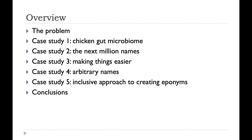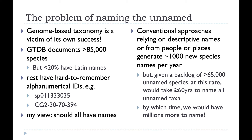The problem of naming the unnamed is the starting point here. Genome-based taxonomy is a victim of its own success. The database GTDB now documents over 85,000 species, but less than 20% of those have well-formed Latin names. The rest have hard-to-remember alphanumerical IDs — trying to remember SP011333035 is beyond human capability. They're not human-friendly.